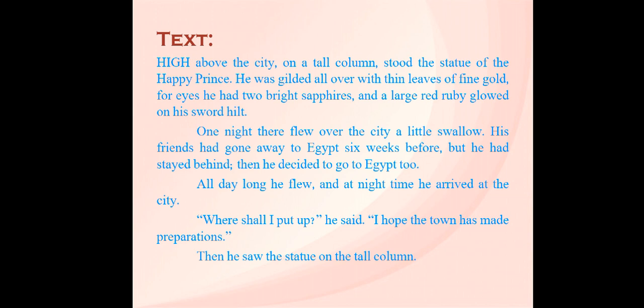One night, a little swallow flew over the city. His friends had gone away to Egypt six weeks before, but he had stayed behind. Then he decided to go to Egypt too. The swallow is a tiny bird, and although it is not a human being, the writer refers to it as 'he' in the story. All the birds of his flock had flown away to Egypt six weeks ago, and this bird later thought of going to Egypt to join his friends.